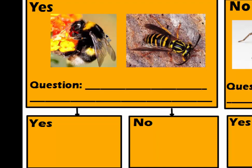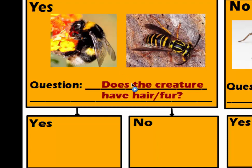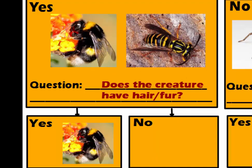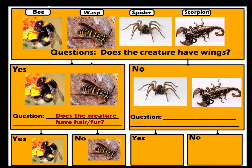The thorax and abdomen of the bee are a bit more round compared to the more cylindrical shape of the wasp's abdomen and thorax. We'll go with the easy observable difference: does the creature have fur or hair? The bee has fur or hair, so it goes in the yes box. The wasp does not have hair, so it goes in the no box. The creature with wings and hair is the bee; the creature with wings but no hair is the wasp.